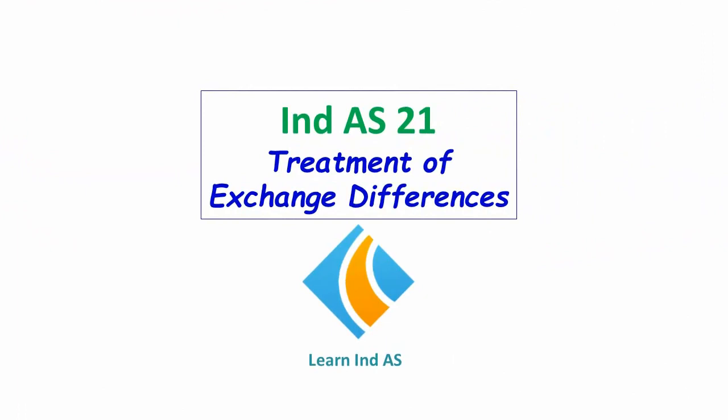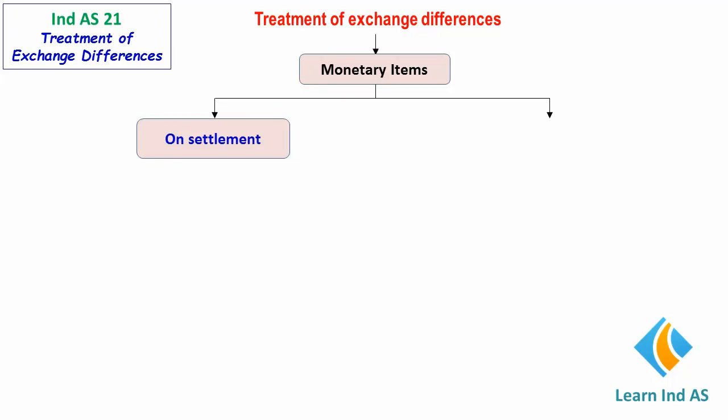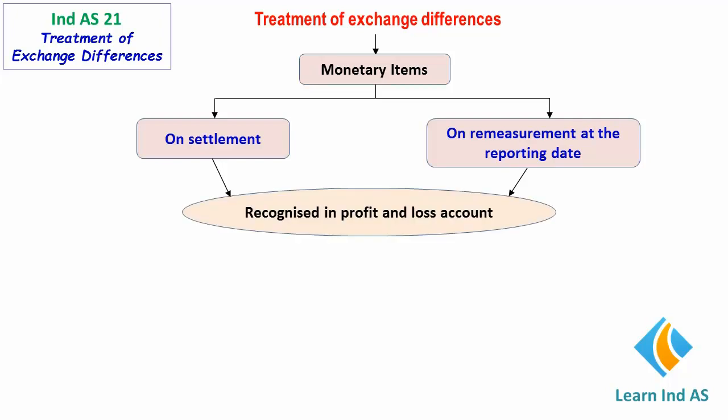In this video, let us examine the treatment of exchange differences in the books of accounts with a practical example. We will analyze the treatment of foreign exchange differences arising on account of translating foreign currency balances to the presentation currency in respect of monetary items. The exchange differences arise either on settlement or on remeasurement at the reporting date, and in both cases they are recognized in the profit and loss account.